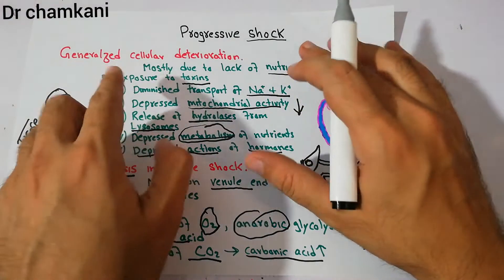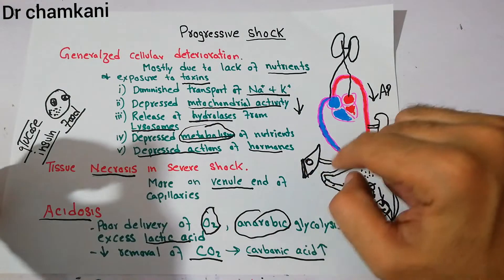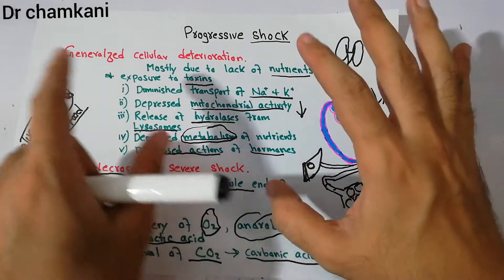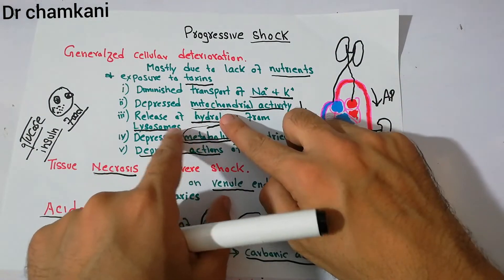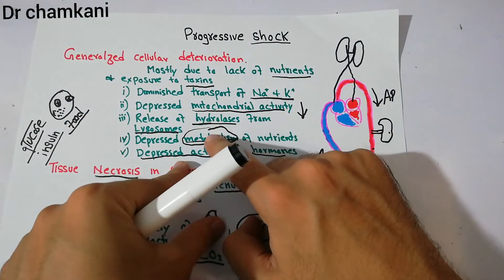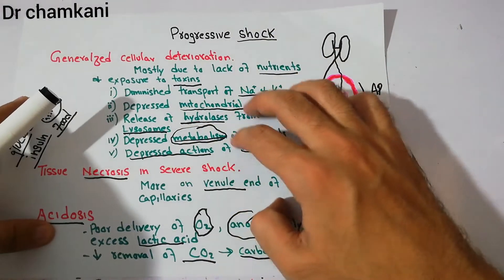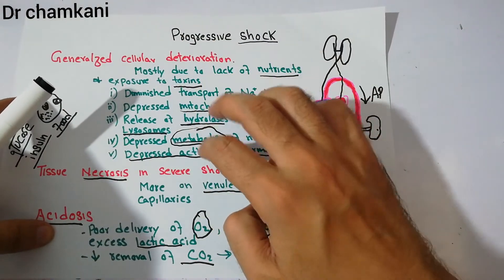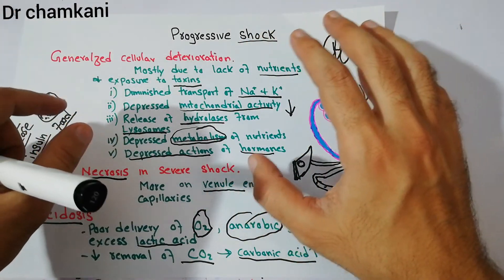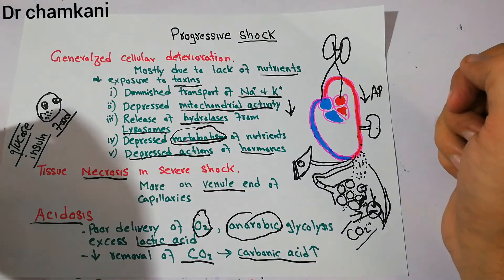In summary, all these factors — lack of nutrients, exposure to toxins, diminished sodium-potassium transport, depressed mitochondrial activity, decreased energy generation, release of hydrolases from lysosomes, depressed hormone actions, tissue necrosis, and acid formation — will ultimately lead to death of the patient if treatment is not given in time. These are the factors that drive shock toward the irreversible stage and ultimately death.